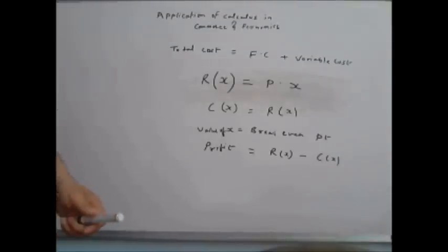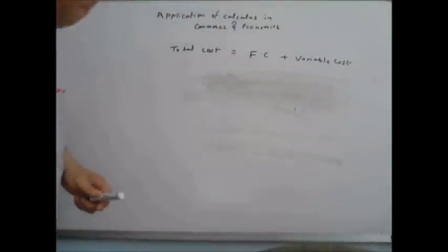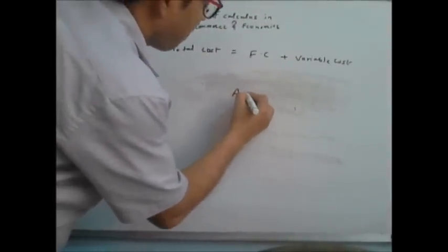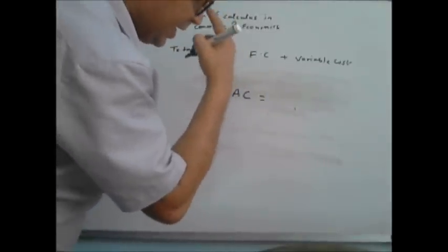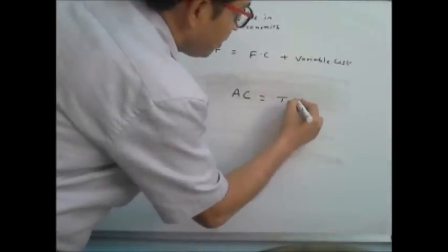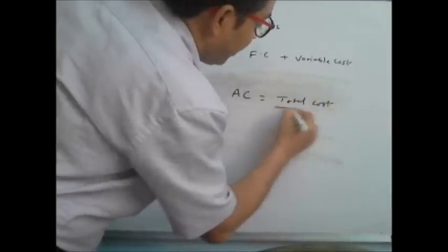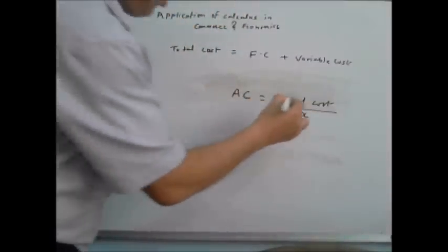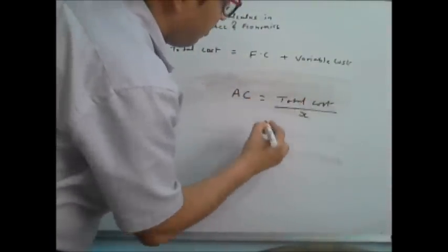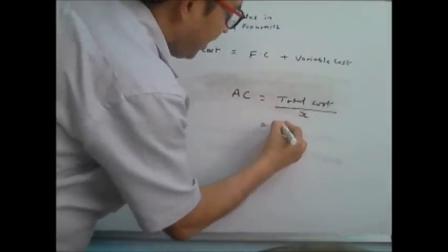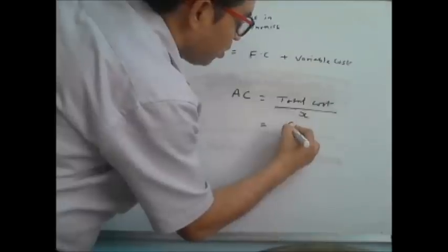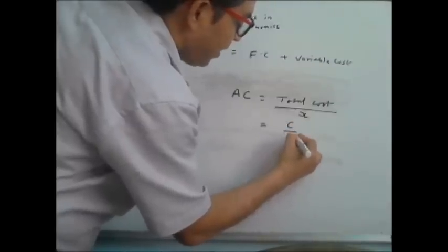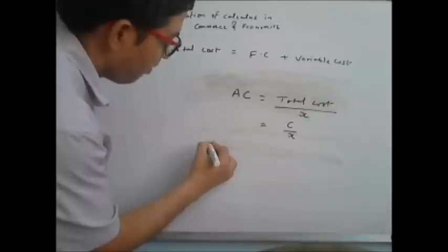Now we will see what is average cost and marginal cost. Average cost, denoted as AC, is the total cost divided by the number of units purchased. So average cost is the cost function C(x) divided by x, the number of units.